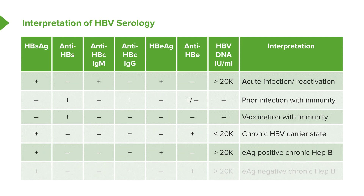Next, e-antigen positive chronic hepatitis B — this is dangerous. You'll find IgG and hepatitis B surface antigen, same as in the chronic carrier. However, e-antigen will be present and HBV DNA will be at a great number. This is extremely active and chronic. E-antigen positivity means the patient has high potential for transmitting the virus to their partner.